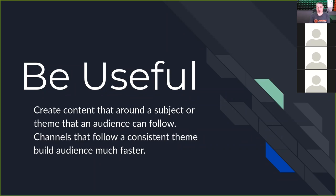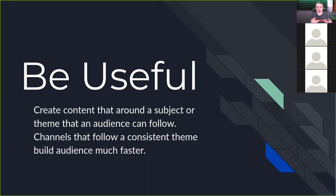Almost always, when people talk about the mistakes they made getting started, it's that they became the variety channel — they decided that everything they could possibly make a video on, they made a video on. If your audience doesn't know what to expect from you, why would they subscribe? If you're jumping between random topic to random topic, that doesn't create a subscriber and an engaged audience. Someone talked about cooking one day and cars the next — I like their car videos but I don't feel like watching their cooking videos. So you niche into what is really good for your audience — it's an ever-changing moving target that you may not get right the first time.